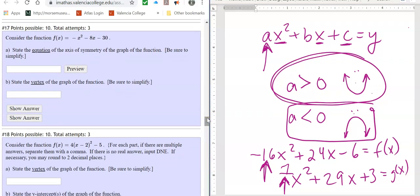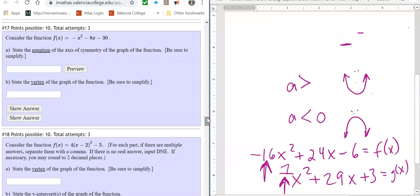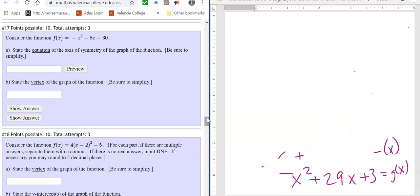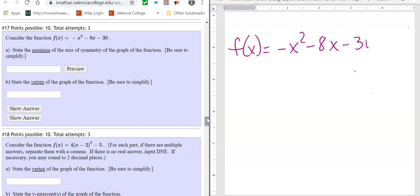Number 17, number 17 is a problem about the vertex. It's not a problem. Now, when it's in vertex form, we can read it with our eyeballs, but when it's not in vertex form, we have to calculate it, okay? So f of x is equal to negative x squared minus 8x minus 30, okay?